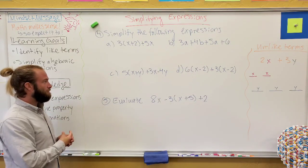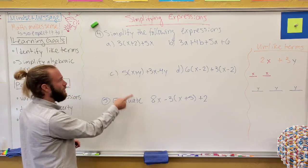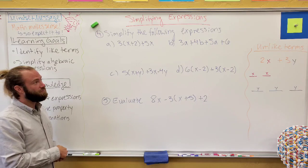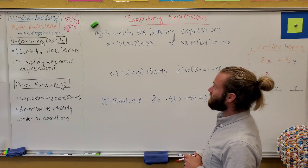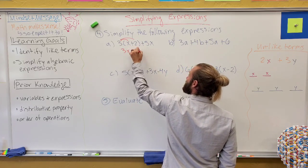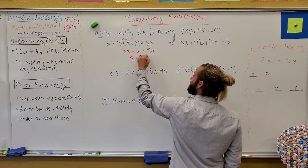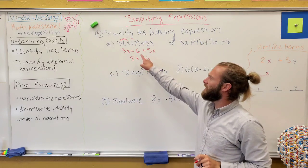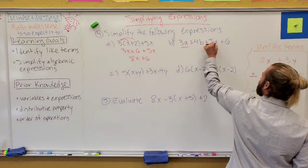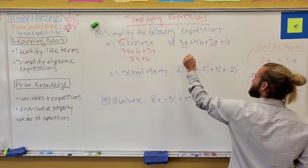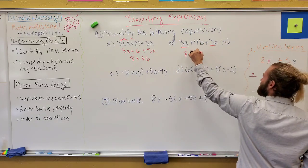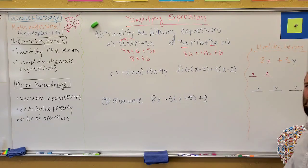For the last examples, I want you to pause and try them yourself first. Let's check answers for example four. For part a, distributing first: 3x plus 3 times 2 is 6, plus 5x, gives 8x plus 6, because 3x and 5x are like terms and 6 has no variable so it stays alone. For part b, we have 3a plus 5a giving 8a, and then 4b and 6 are alone — so just one combining step there.